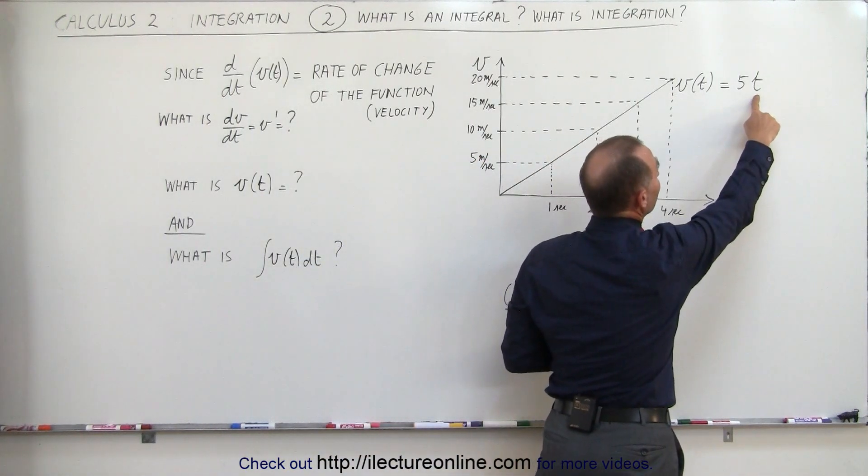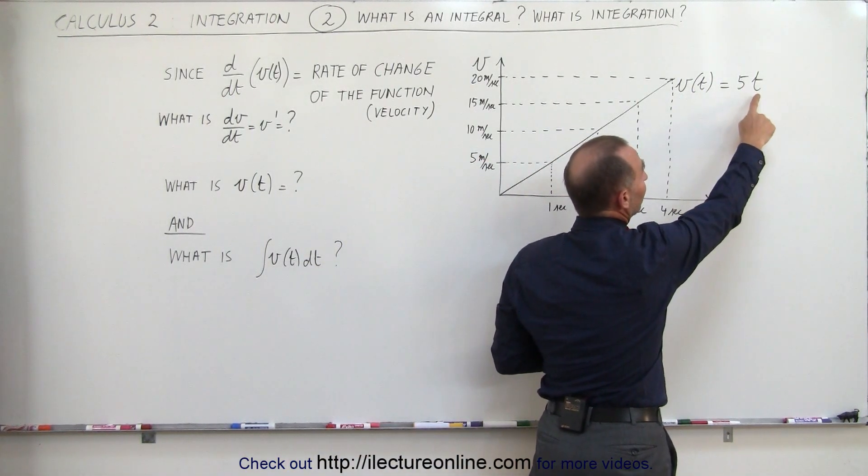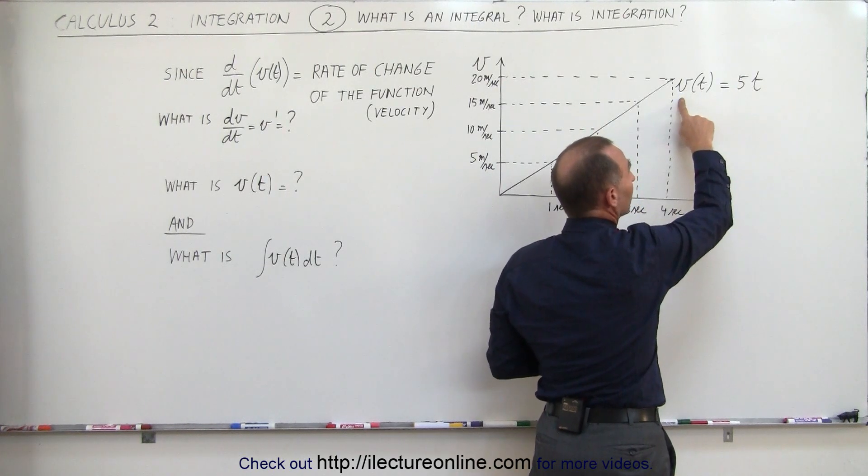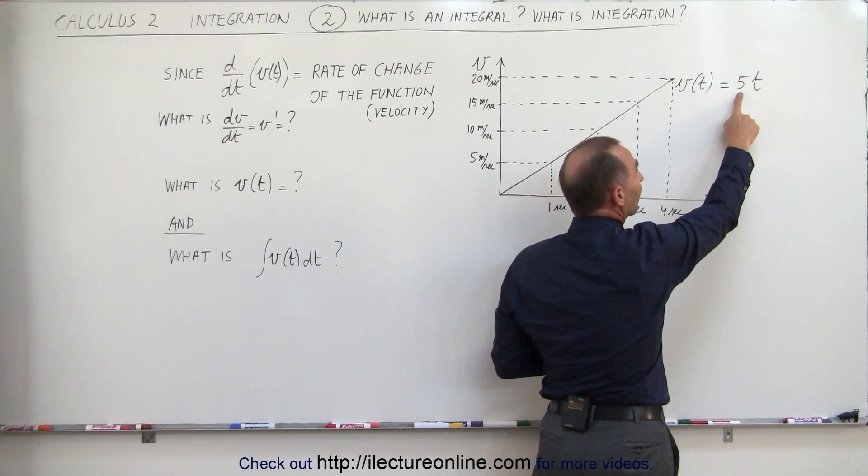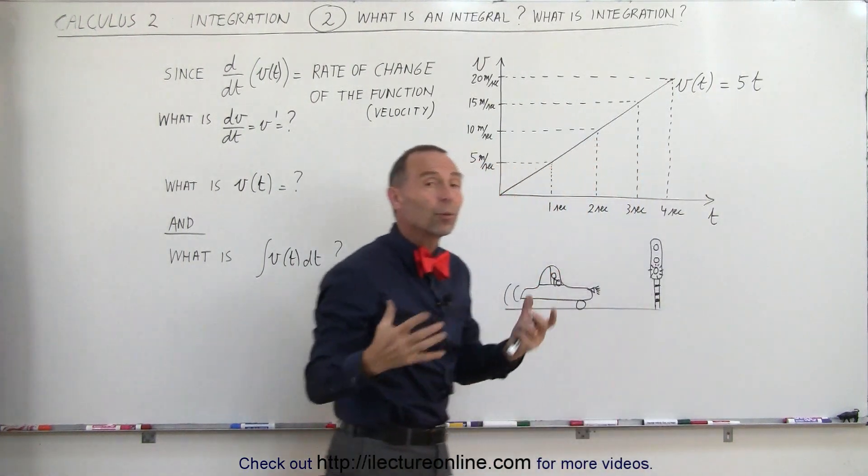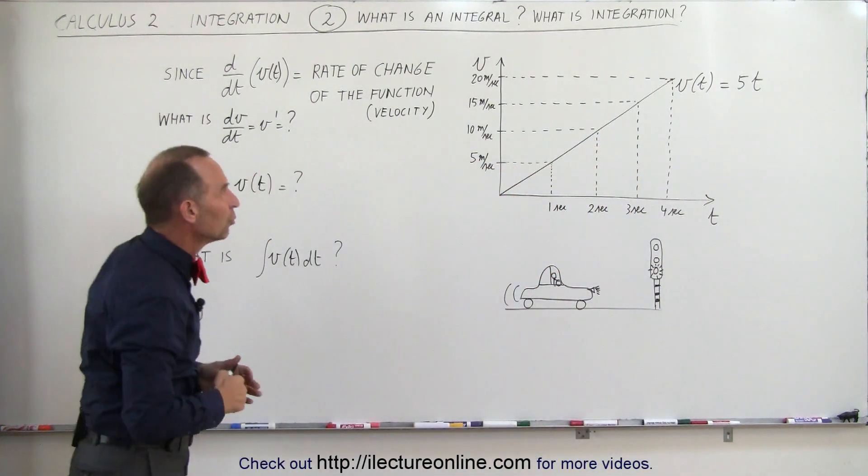All we have to do is plug in a value for t and we get the velocity. If t equals 0, we get 0. If t equals 1, we get 5. If t equals 2, we get 10. So the equation tells us how fast the car is moving.